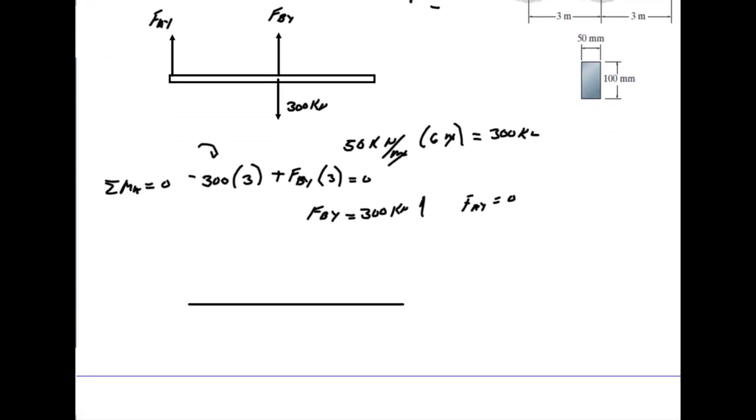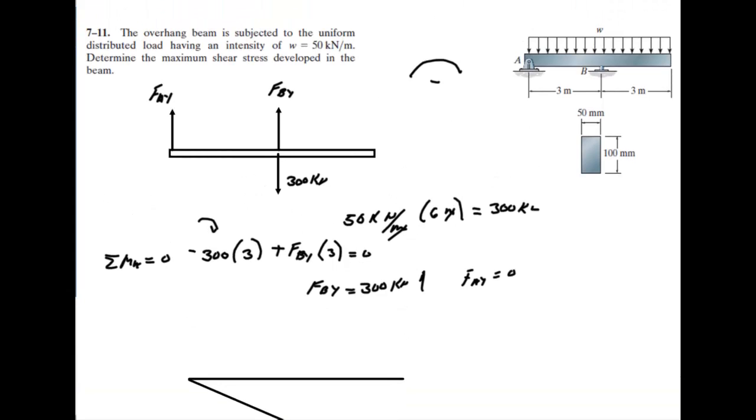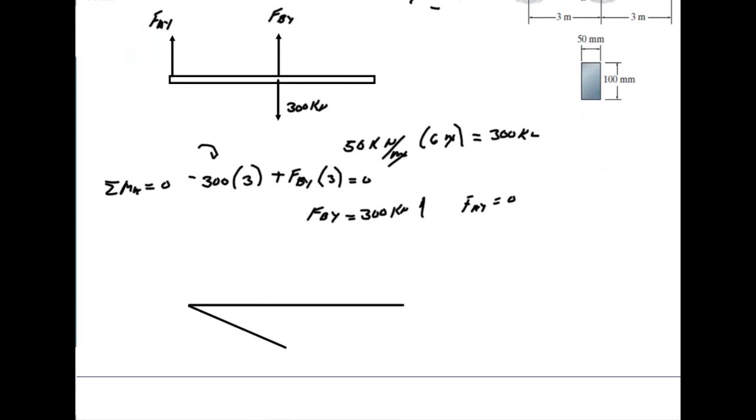We'll go like this all the way to the middle. If you figure out what that load is, it would be 50 kilonewtons times 3, or 150 when you reach B. So I'll label this as minus 150.